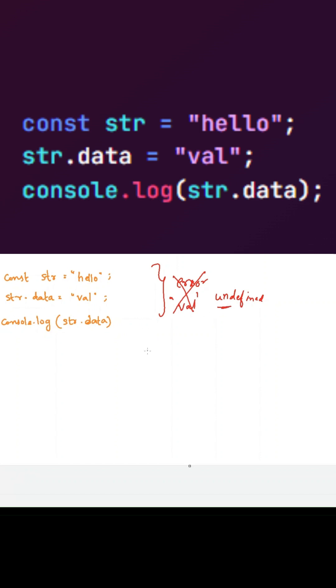What are the primitive data types in JavaScript? String, number, or boolean, right? These primitive data types do not hold any properties. So it should throw an error. But why isn't it throwing an error?